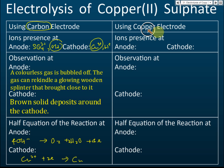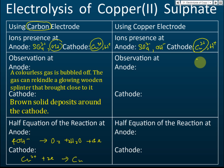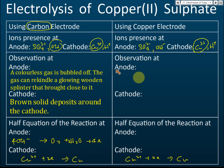Now, how about if we use copper electrodes? The ions present are still the same: hydroxide, copper ions, and hydrogen ions. At the cathode, the reaction is still the same — copper ions are selected to be discharged, receiving electrons to form copper metal. No problem there. But what about the anode?